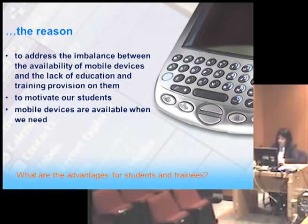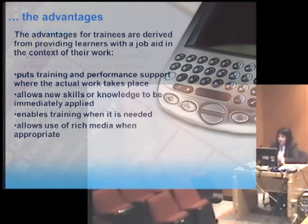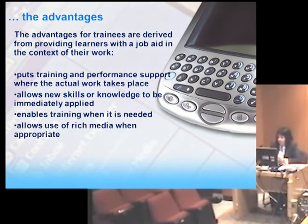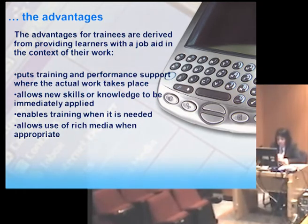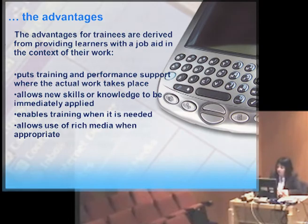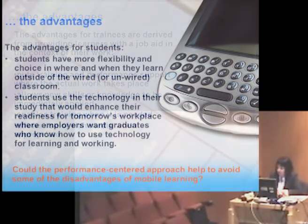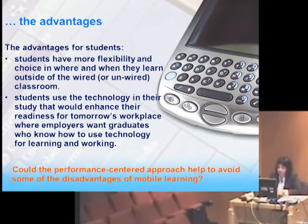What are the advantages for students and trainees? The advantages for trainees are derived from providing learners with a job aid in the context of their work: it puts training and performance support where the actual work takes place, allows new skills or knowledge to be immediately applied, enables training when it is needed, and allows use of rich media when appropriate. For students, there is more flexibility and choice in where and when they learn outside the classroom. Students use the technology in their study that enhances readiness for tomorrow's workplace, where employers want graduates who know how to use technology for learning and working.